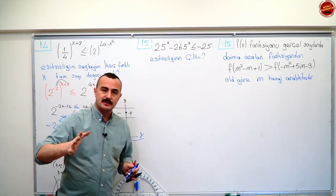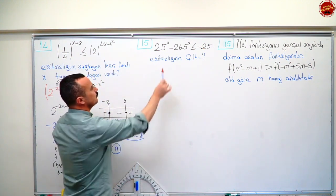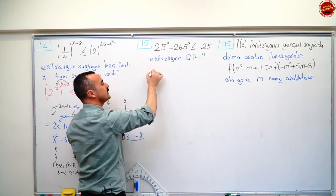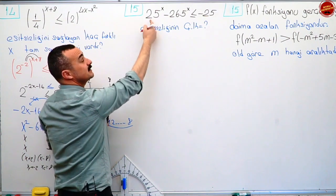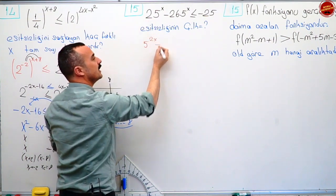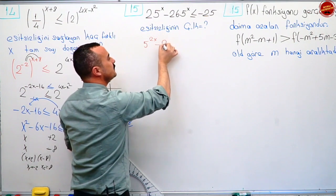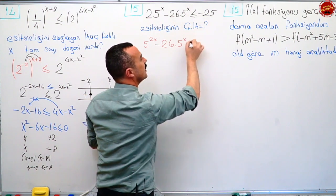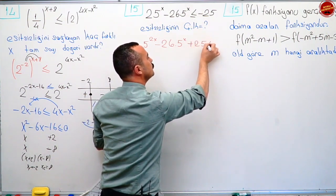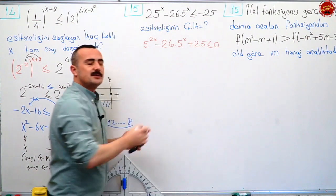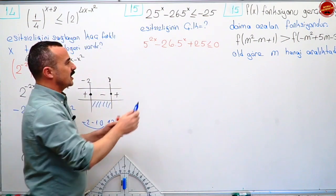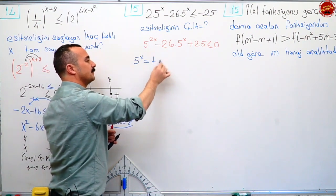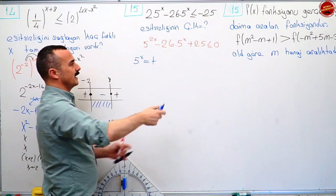Değişken değiştirmeli bir eşitsizlik sorusu. Burada yirmi beş üzeri x var, beş üzeri x var. Kolay çözebilmek için yirmi beş üzeri x'i beşin karesi gibi düşünüp beş üzeri iki x gibi düşünüyorum. Eksi yirmi altı çarpı beş üzeri x; eşitsizlik olabilmesi için yirmi beşi bu tarafa alıyorum. Küçük eşit sıfır. Beş üzeri x'e t diyorum.